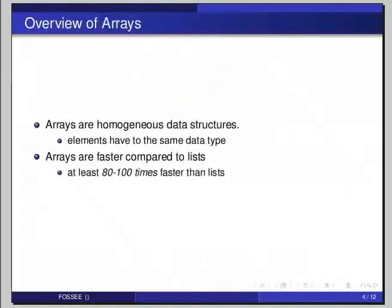Arrays are homogeneous data structures, unlike lists. Arrays cannot have heterogeneous data elements — they can have only one type of data as their entries, be them all integers, strings, or floats, but not a mix. Arrays of a given length are comparatively much faster in mathematical operations than lists of the same length because they are homogeneous data structures.